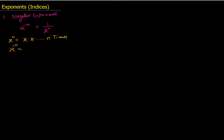Well, very simple. When the exponent is negative, it means that we are multiplying the reciprocal of the base n times. The reciprocal of x is 1 divided by x, based on the property of real numbers. So we are multiplying the reciprocal n times. This is the way we can define a negative exponent in the same manner as we have defined the positive exponent, giving us similar definitions for both x raised to the power n and x raised to the power minus n.